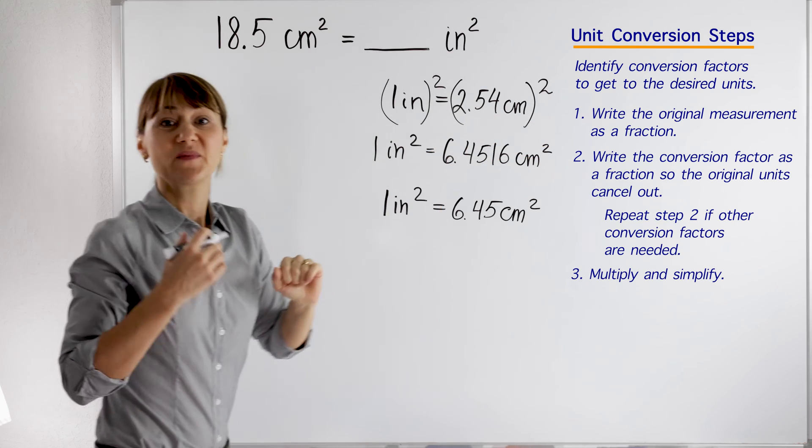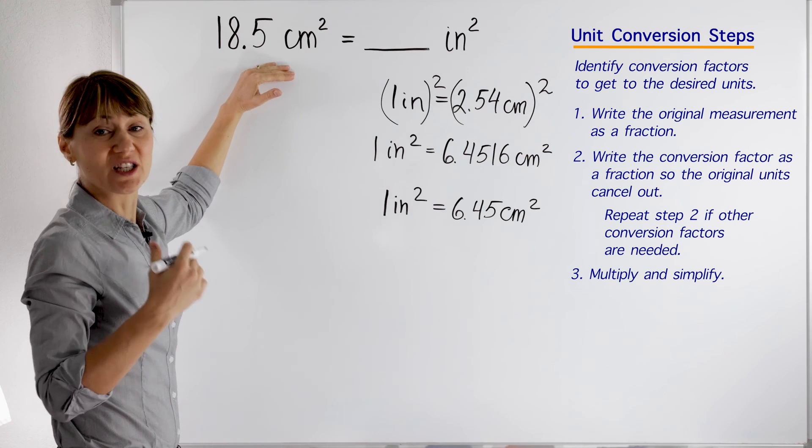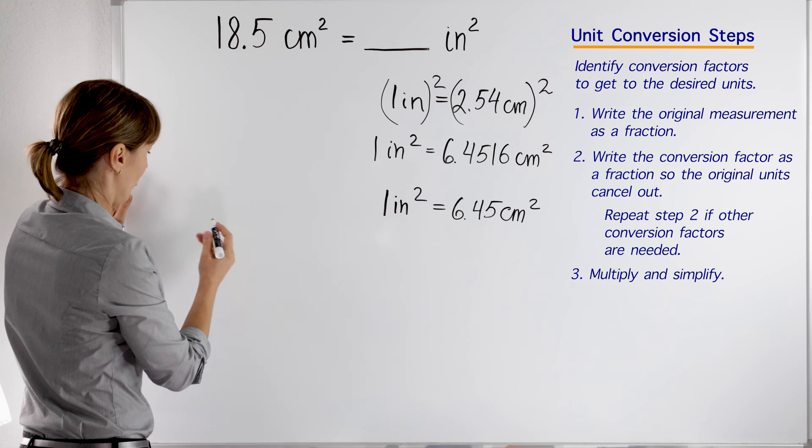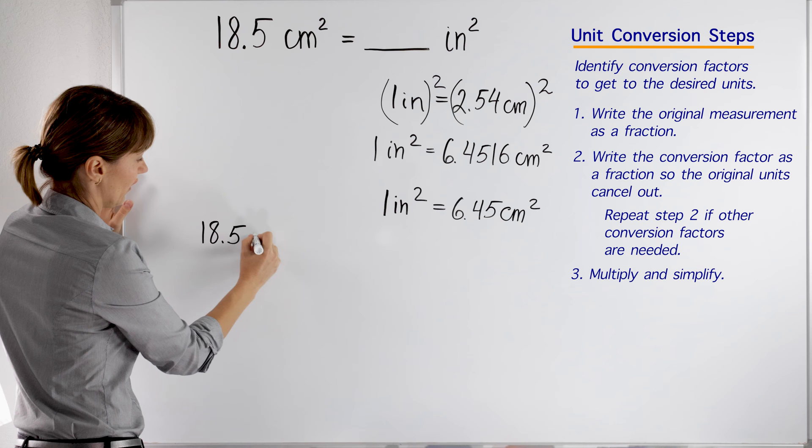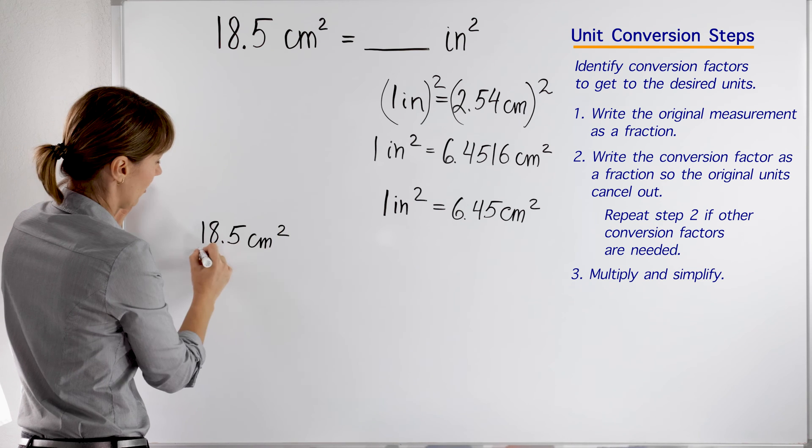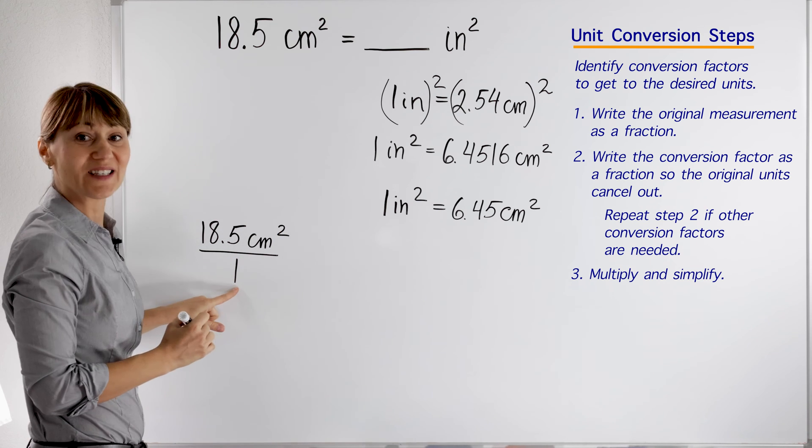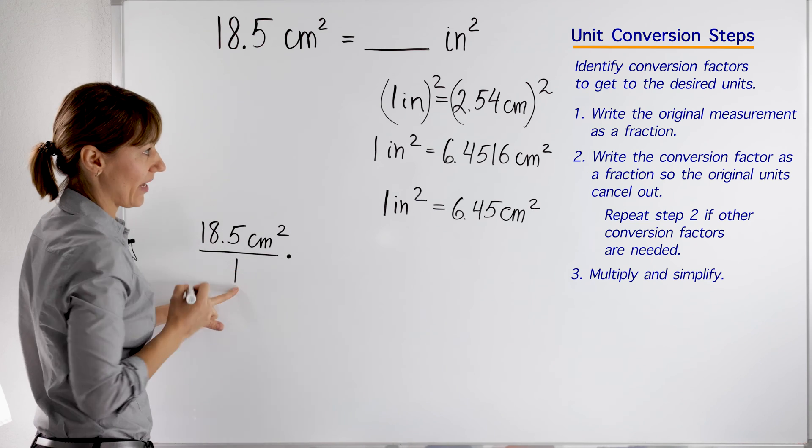The first step tells us to write the original measurement as a fraction. So what do we have here? We have 18.5 cm² over 1. We wrote it as a fraction and we are ready to multiply.